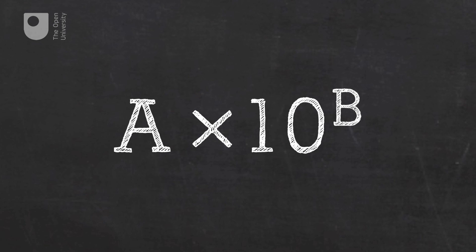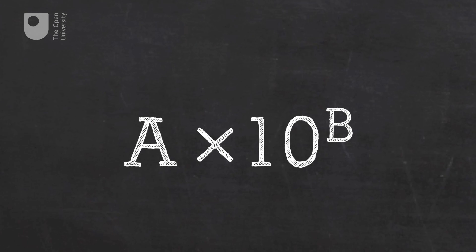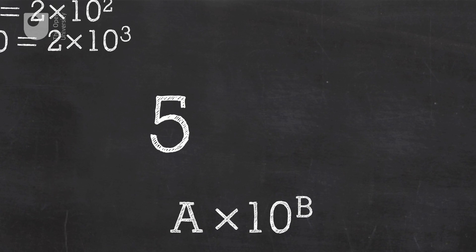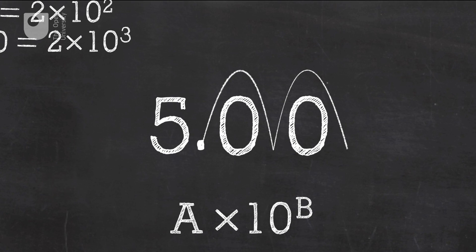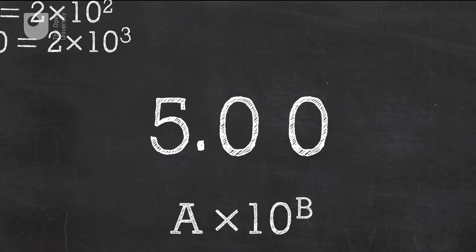Let's start with the number 500. You can visualize the process of scientific notation by focusing on the decimal point and imagining it hopping over digits until there's only one digit left in front of it. Note that the number left in front of the decimal needs to be greater than zero and less than ten. For 500, the actual number can also be written as five times ten times ten.